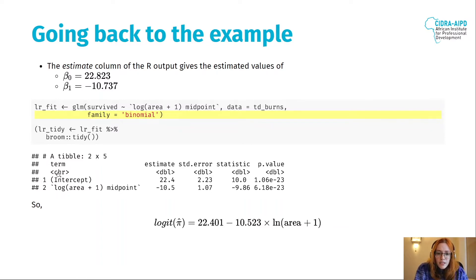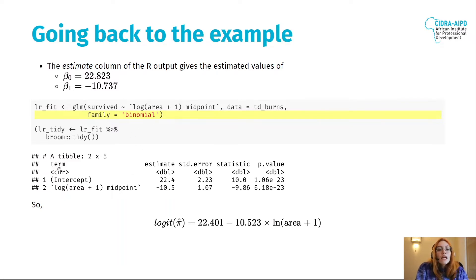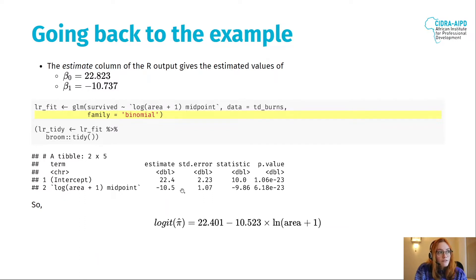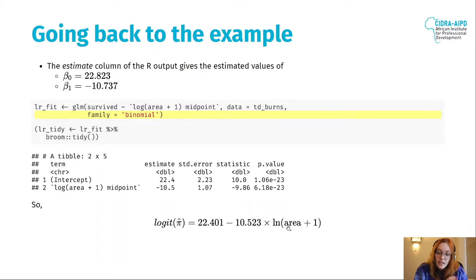On the output, we have a table — a tibble, which is part of the tidyverse libraries. Broom is also a tidyverse library. We have the intercept — that is our beta zero — and we can see the estimate is 22.4, and the log area coefficient is minus 10.5. So our formula, our pi(x), is going to be 22.4 minus 10.5 times the logarithm of the area, and that gives us the probability of survival.